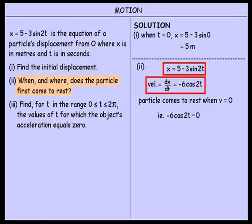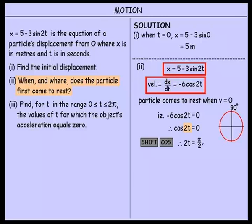This is a trig equation. We divide firstly by minus 6, and to get 2t by itself we use the shift cos technique to get rid of the cos. We get an answer of 90 degrees, so 2t equals π on 2, since we always work in radians. If you get an answer right on the boundary — in this case 90 degrees — we need to check the opposite angle, which would be 270 degrees.